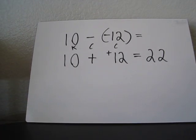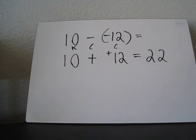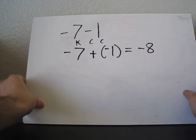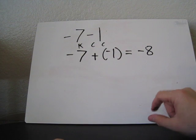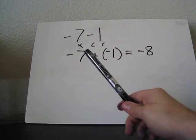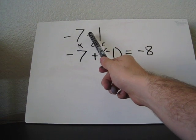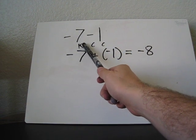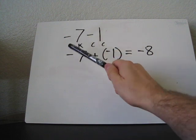Let's show a negative example. Here's negative 7 minus 1. Using the KCC method, we change the last two, but we keep the first.